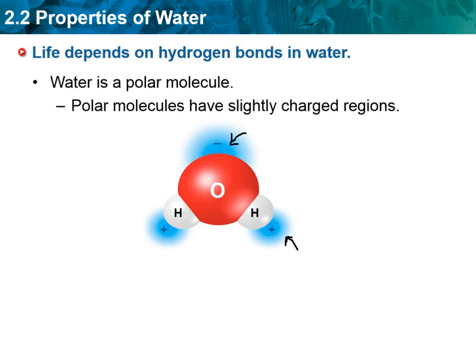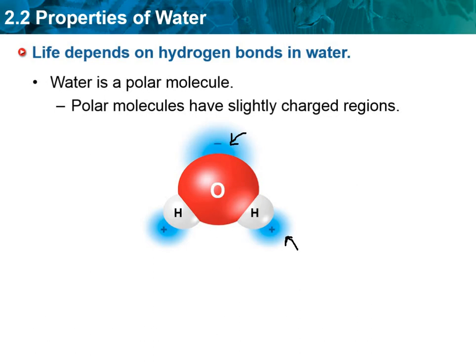So that's what it means to be a polar molecule — it's going to have an end that is slightly positive and an end that's slightly negative. Nonpolar molecules do not have a charged area, so there's not going to be a positive or a negative on one end or the other. An example of a nonpolar molecule would be oils and things like that.